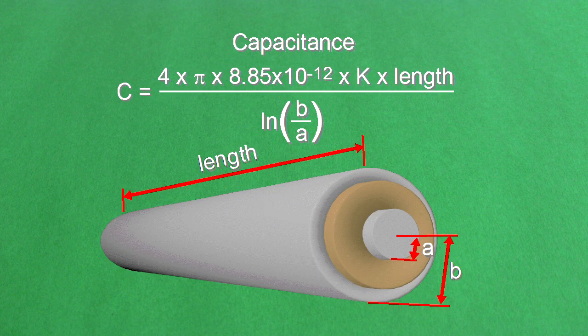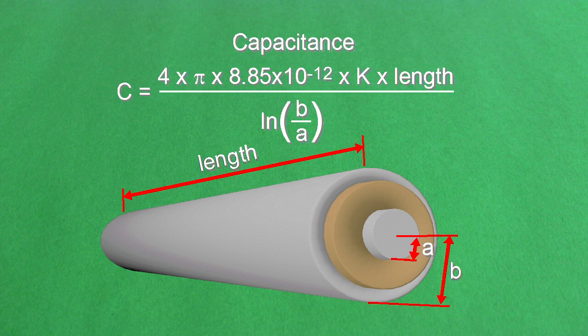There are different capacitance formulas for different shapes. For example, this is the one for a cylindrical capacitor where one plate is a cylinder and the other is a rod through the center of the cylinder.